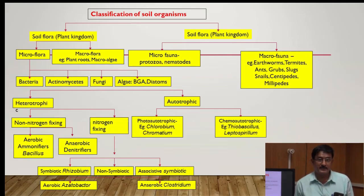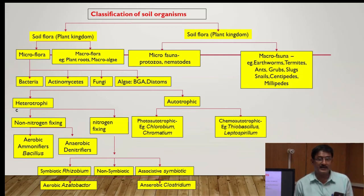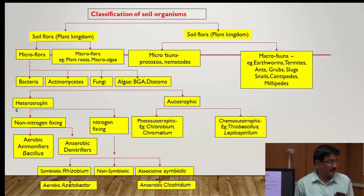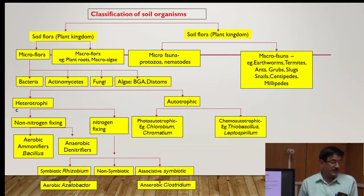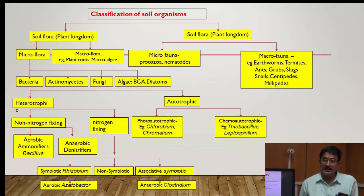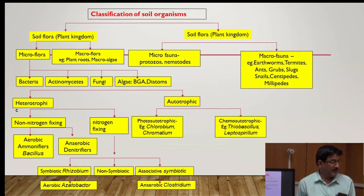Micro flora is divided into four groups: bacteria, fungi, actinomyces, and algae including BGA (blue green algae). Macro flora includes plant roots and macro algae. These are the micro flora groups.